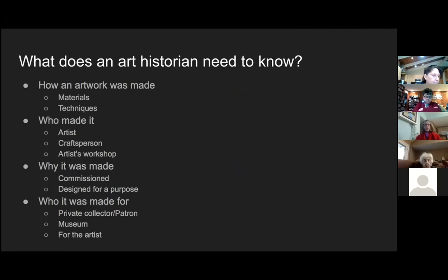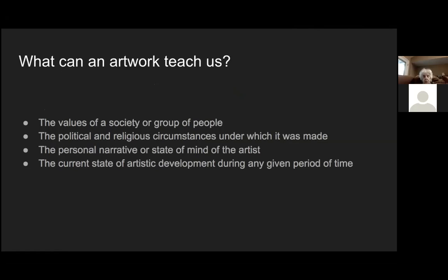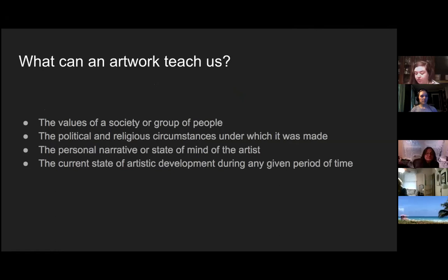Finally, we'll need to know who it was made for. An artwork could be made for a person, for a museum, for the artist's own use, or for some public space — all of which factors into the context and purpose of the artwork. Looking at and interpreting artwork can help us understand the values of a society, the political and religious circumstances under which it was made, the personal narrative of the artist, and the state of artistic development during any given period of time.